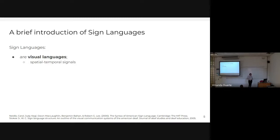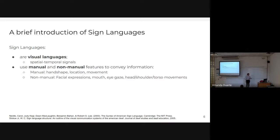Sign languages are visual languages expressed by the movements of parts of the body, usually conveyed by different features. In terms of data, we usually work with videos, which makes research a bit more complicated. They use different parts of the body to convey information — these are called manual and non-manual features. Manual features include hand shape, location, and movements of the hands and arms. Non-manual features refer to facial expressions, mouth, eye gaze, head and shoulder movements, and the whole body.